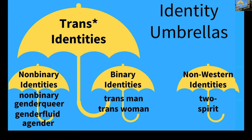Because language changes over time and place, we created umbrella categories. Trans identities cover any identity that isn't cisgender male or cisgender female. Binary trans identities are where someone is transgender but still considers their gender identity to fit into a binary model — either a man or a woman.